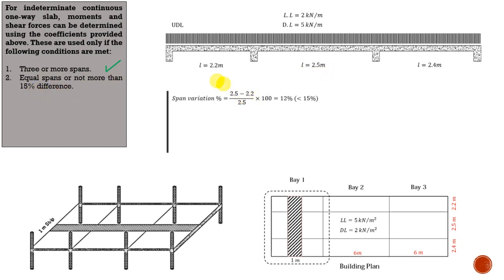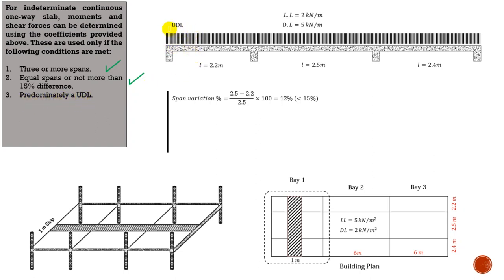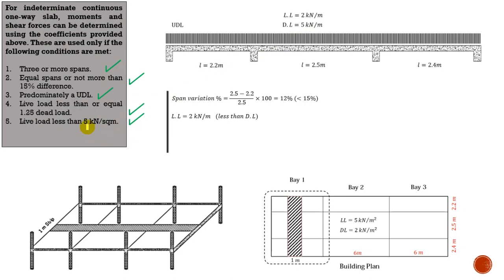First, I must have three or more spans — I've got three spans here, so that's a tick. Another condition is equal spans or not more than 15% difference. Taking the largest span 2.5, minus the least one 2.2, divided by the original, multiplied by 100 gives 12% — less than 15%, so that's another tick. In real life you don't really have nearly identical dimensions; you'd probably get uniform spans like 2.5, 2.5, and 2.5. But for the sake of explaining this method I made them nearly identical.